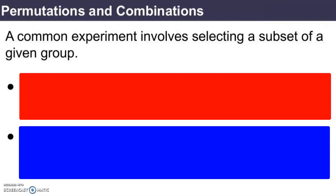And we want to focus on a specific type of experiment today. A common experiment involves selecting a subset of a given group, a smaller set of that group. And here are a couple of examples.